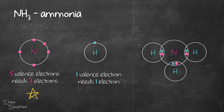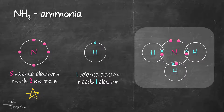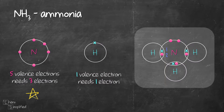Hydrogen has already used up the one electron it has. Nitrogen has used up three out of the five valence electrons, so the remaining two we're going to draw out like this. With that, we're done drawing the dot and cross diagram for NH3, since N is now octet and H also has a full valence shell.